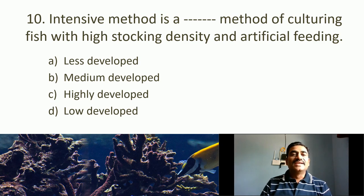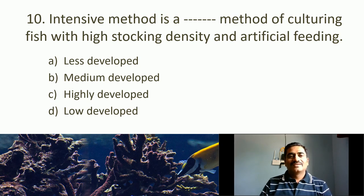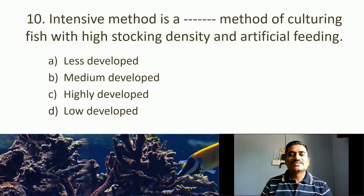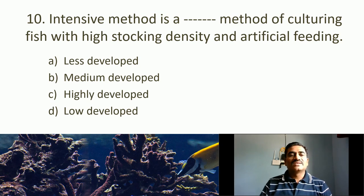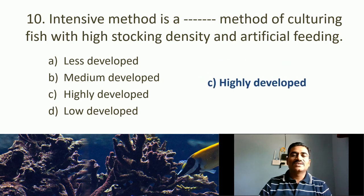Tenth MCQ: Intensive method is a what type of method of culturing fish with high stocking density and artificial feeding? Options: less developed, medium developed, highly developed, low developed. We can divide aquaculture into extensive, semi-intensive, intensive, and supra-intensive methods. In the intensive method, care is higher, the environment is manipulated, and artificial feeding is done. It is a highly developed method. The correct answer is highly developed.